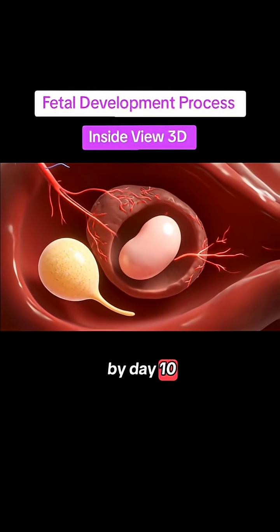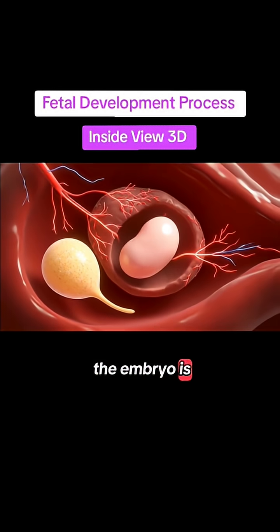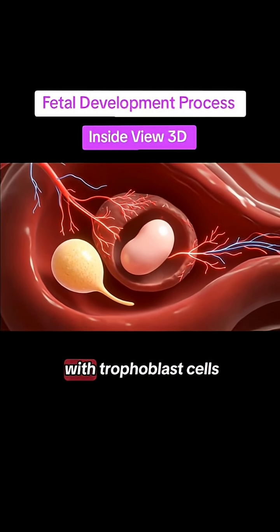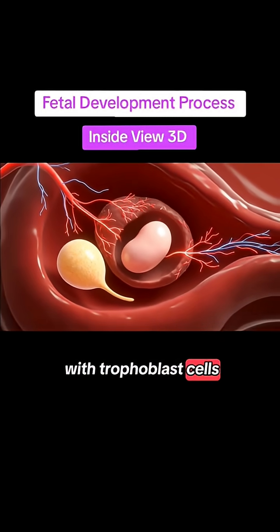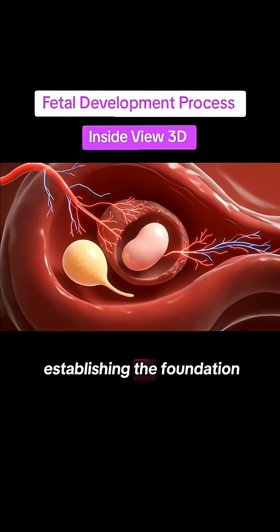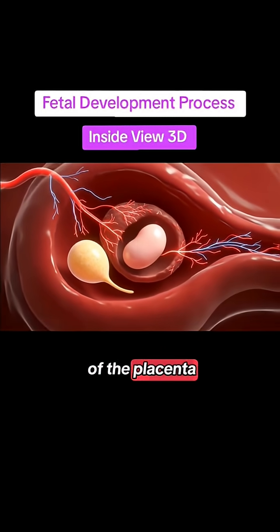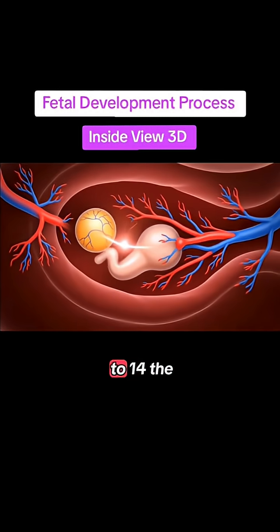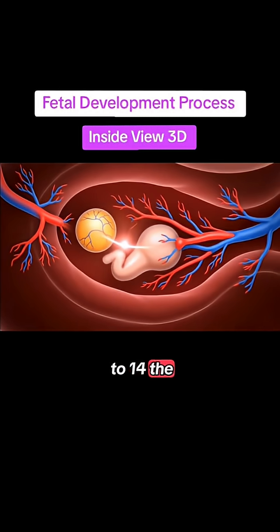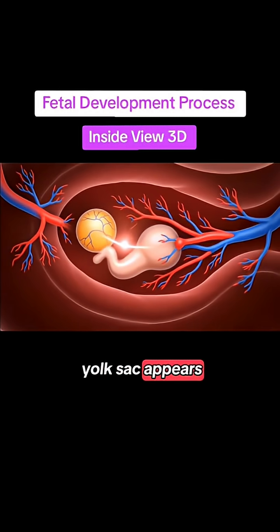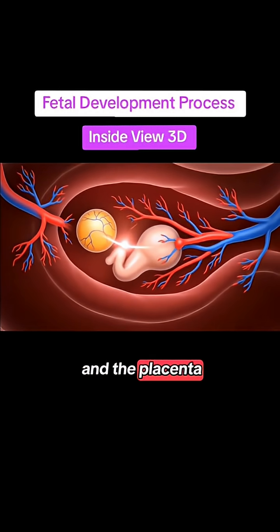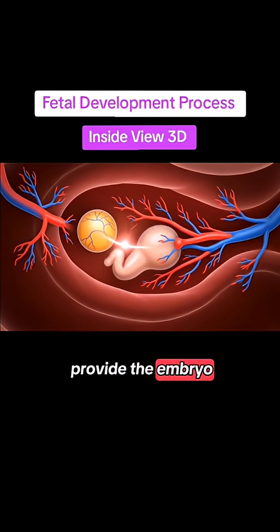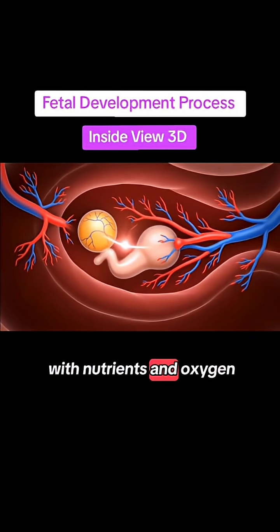By day ten, the embryo is almost fully implanted, with trophoblast cells establishing the foundation of the placenta. By day thirteen to fourteen, the yolk sac appears, and the placenta begins forming to provide the embryo with nutrients and oxygen.